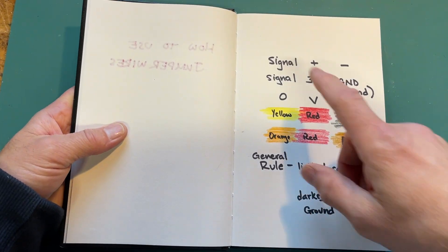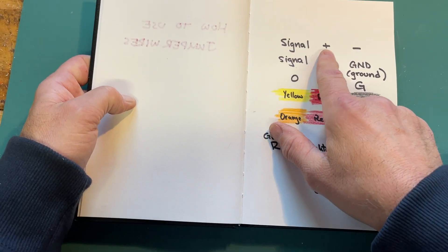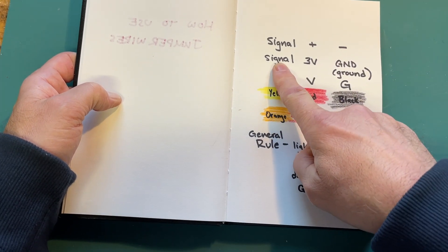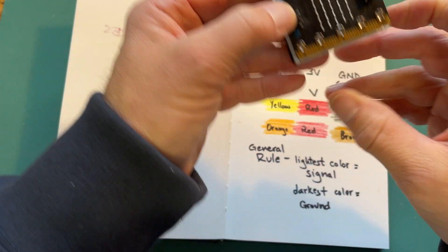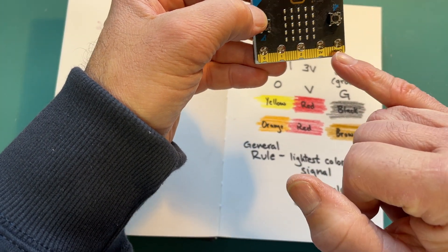There's also different ways of saying this. You could say signal, positive, and negative. You could say signal, three volts, and ground. GND. That's what it says on here: 3V and GND. Or you can say 0VG. Zero is a specific pin because here it says 0VG.